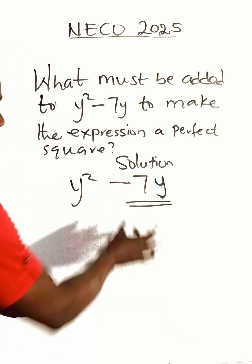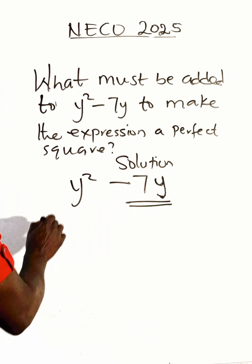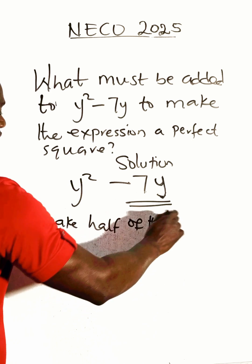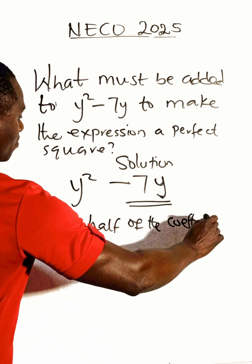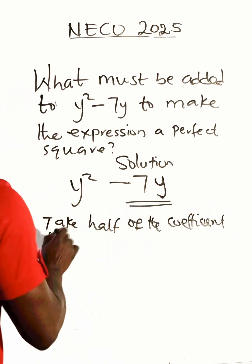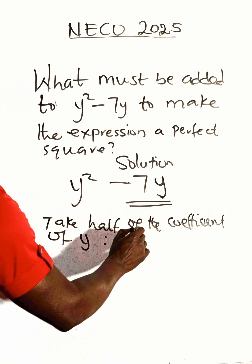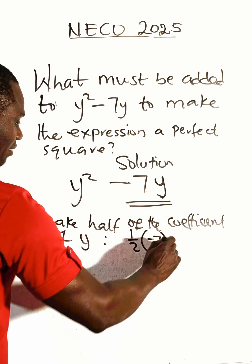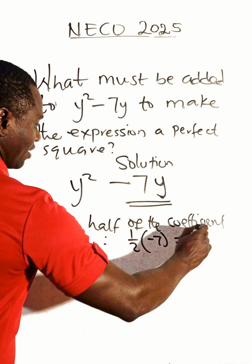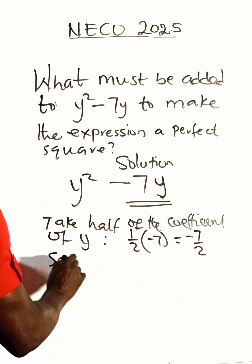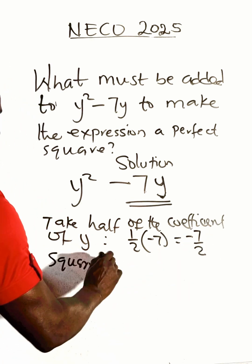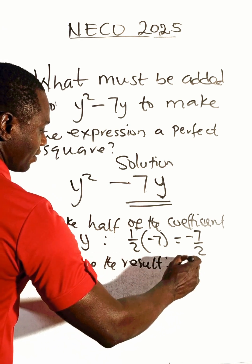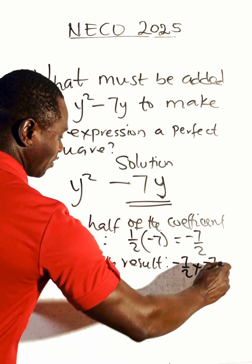The number multiplying y is minus 7. So we take — first of all — half of the coefficient of y. That means half of minus 7, and that gives us minus 7 all over 2. Then we square that result.